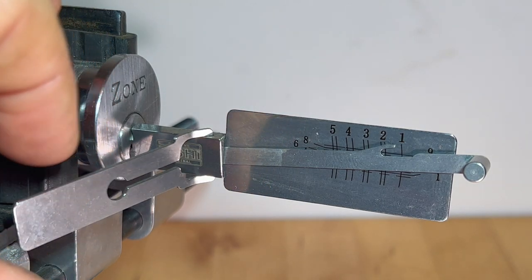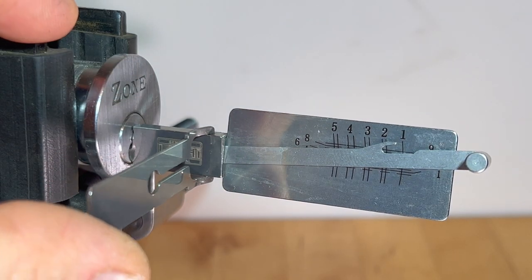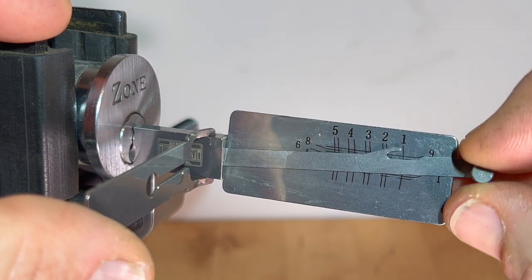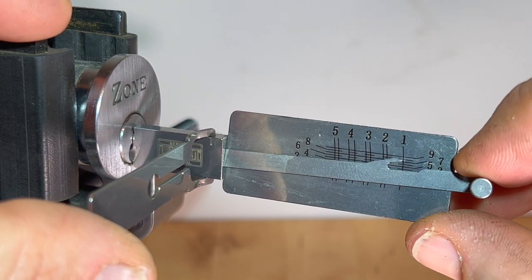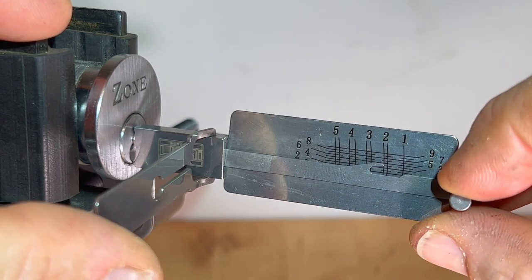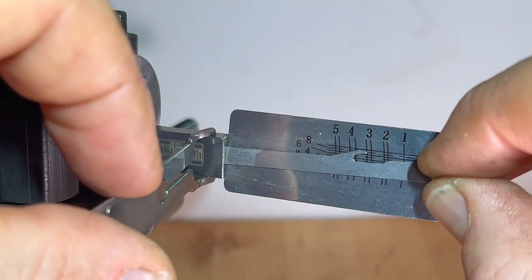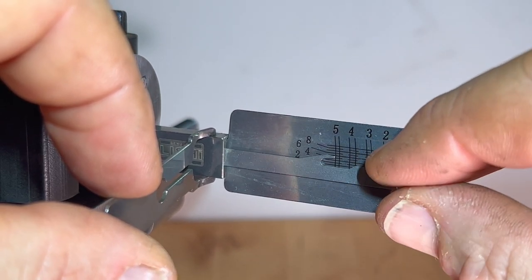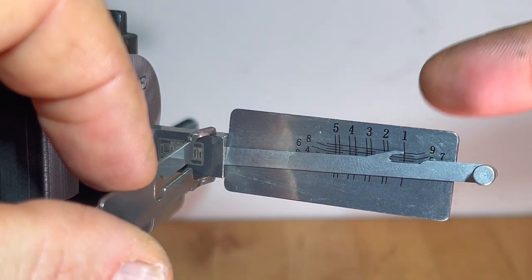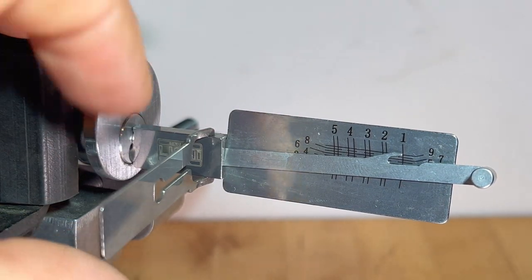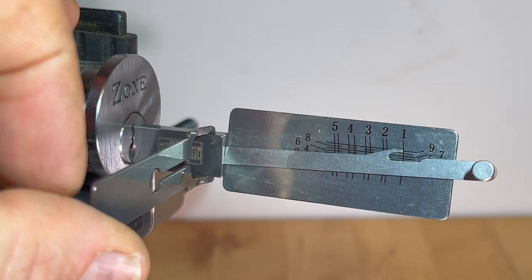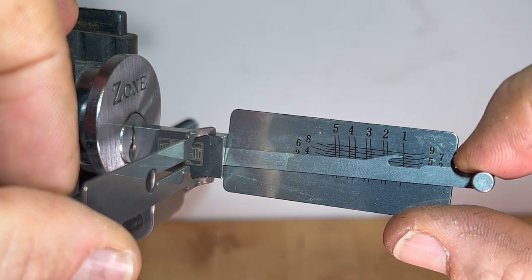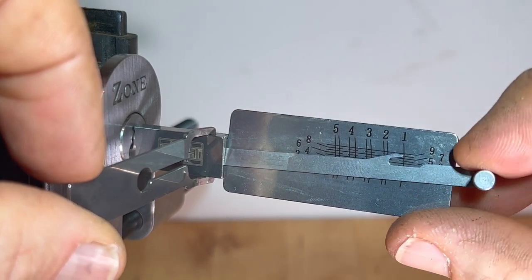So I'm going to apply gentle pressure, gentle tension, and then I'm just going to check that I've got access to all the pin chambers. So pin one, two, three, four, and five are all available, so we know that we can pick this lock using this tool. A little bit of gentle tension and we're going to go through the picking process.